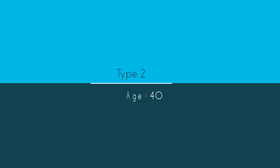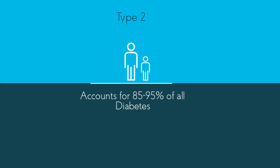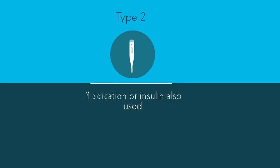Type 2 diabetes usually appears in people over the age of 40, but it is becoming more common in children and younger people. It accounts for between 85 and 95% of all diabetes, and is treated with a healthy diet and regular exercise. Medication and or insulin are also often used.